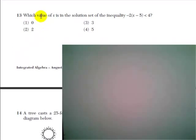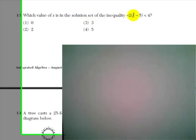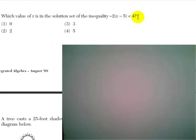Question 13 asks us which value of x is in the solution set of the inequality negative 2 times x minus 5 is less than 4?